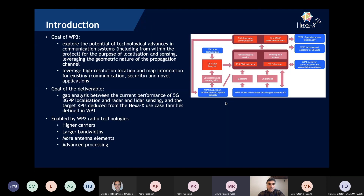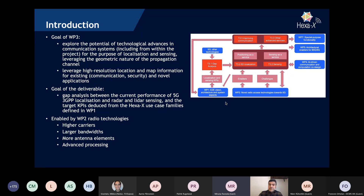The goal of Work Package 3 is twofold. First, we want to explore the potential of technological advances in communication and how we can use that for sensing and localization. Second, we want to see how we can use information regarding the position of a device and the environment to do a better job in communication, whether for beamforming, pilot overhead reduction, and such.